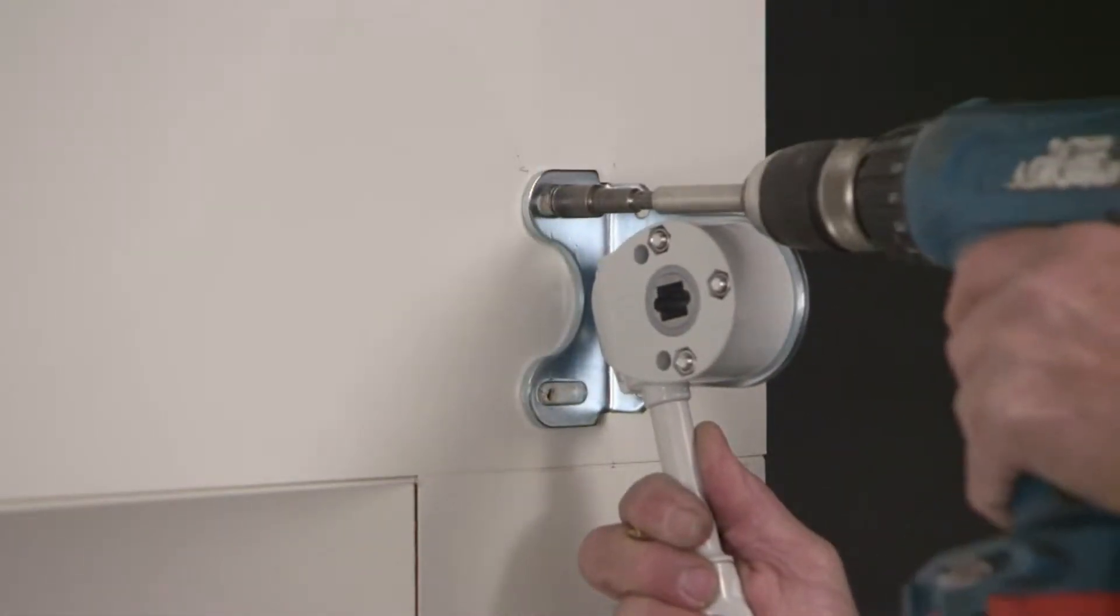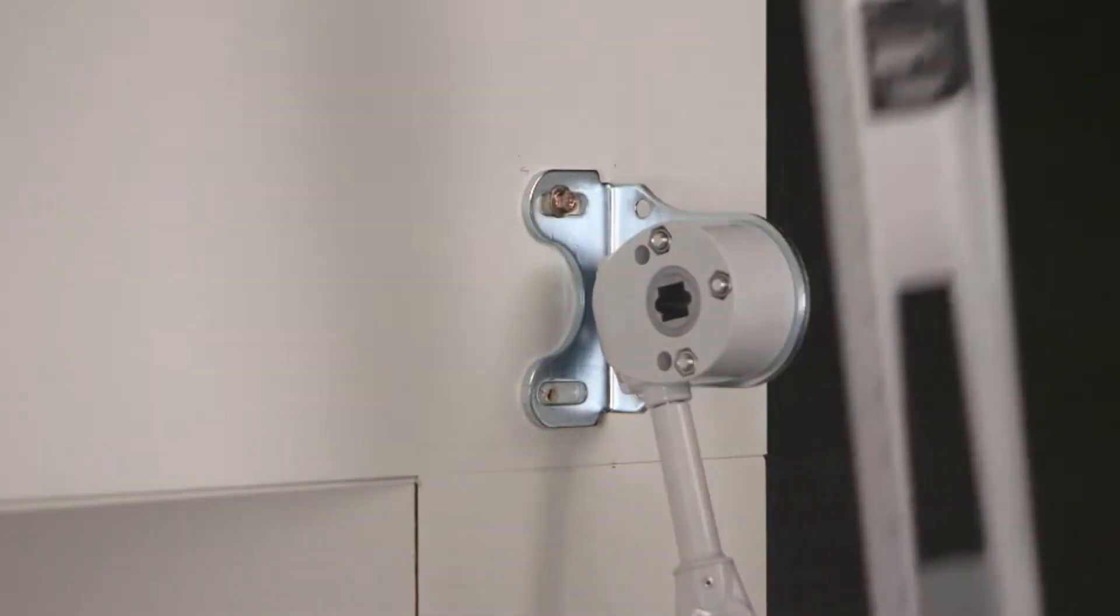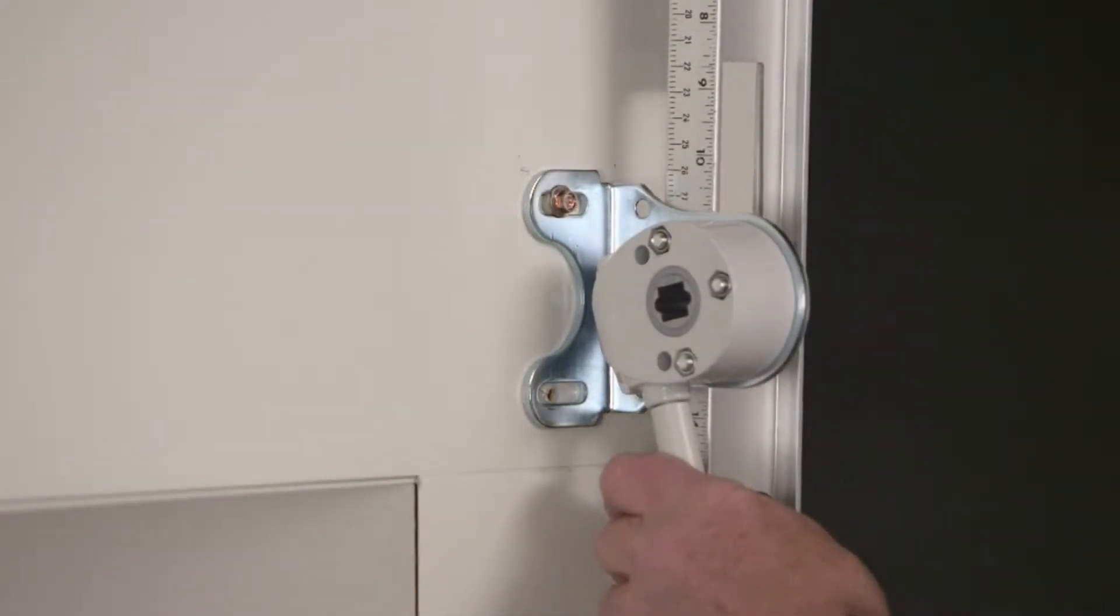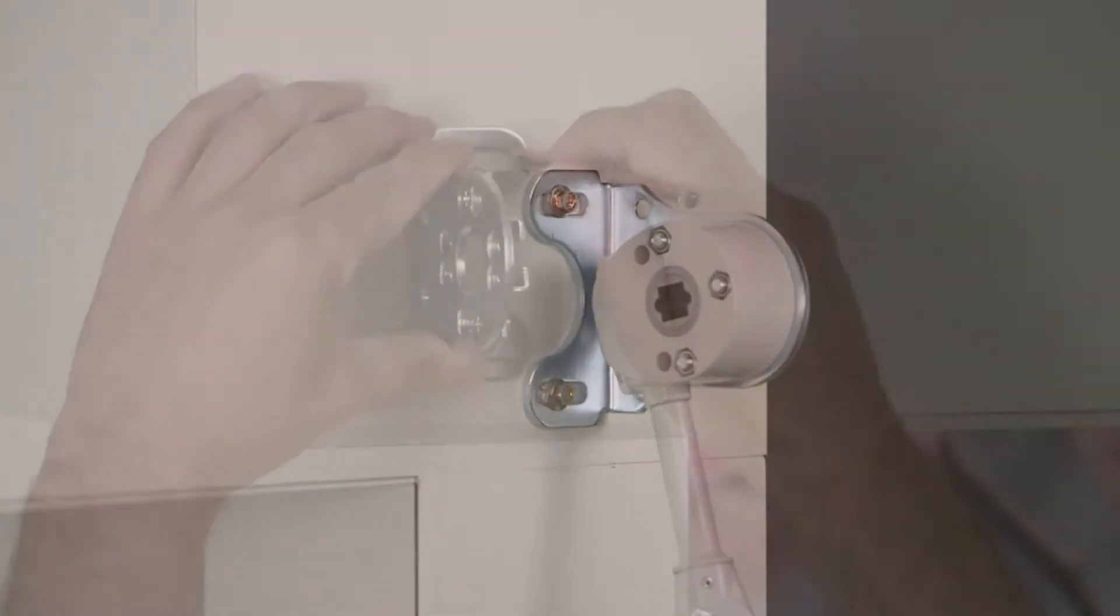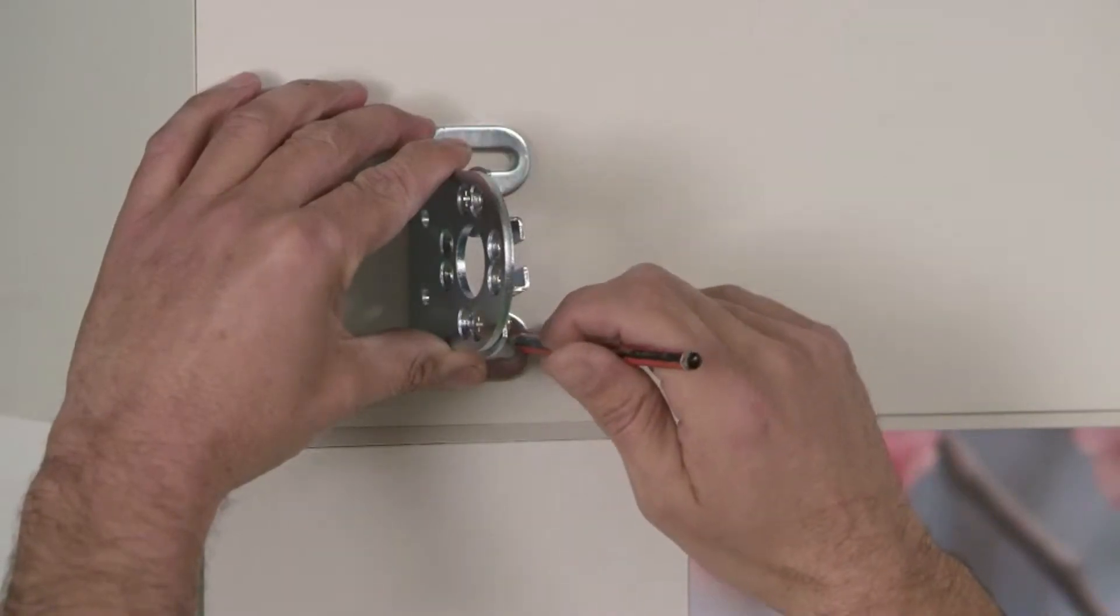Screw the first bracket in place. Ensure the bracket is installed straight using a spirit level. Repeat the process for the second bracket.